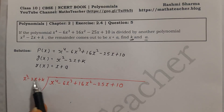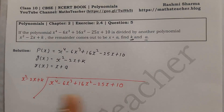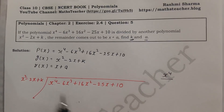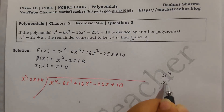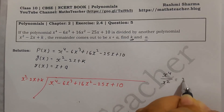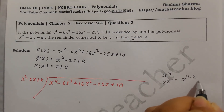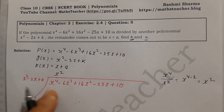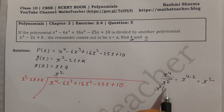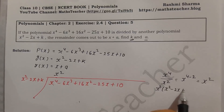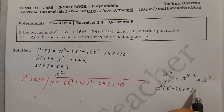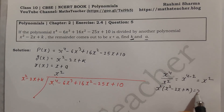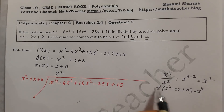Now let's find the first quotient. We divide the divisor's highest degree term into the dividend's highest degree term. When we divide x⁴ by x², we subtract the powers: 4 minus 2, so our first quotient term is x². Now we multiply the quotient x² with the divisor. Since the base is the same, the powers add: 2 plus 2 is 4, giving x⁴.